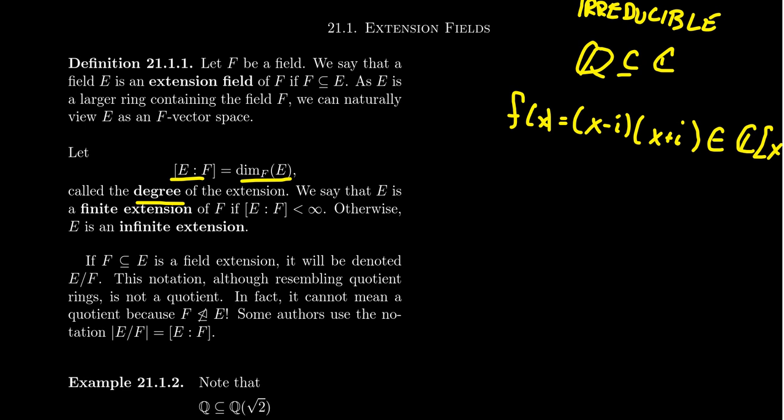Now, if you look at that notation, E colon F, that looks a lot like the index of a subgroup inside of a group. The similarity of notation is intentional right here. We actually want to look at that because when we start introducing Galois groups, we will see there's a relationship between the degree of an extension field and the index of corresponding groups. But I'm getting ahead of myself here.